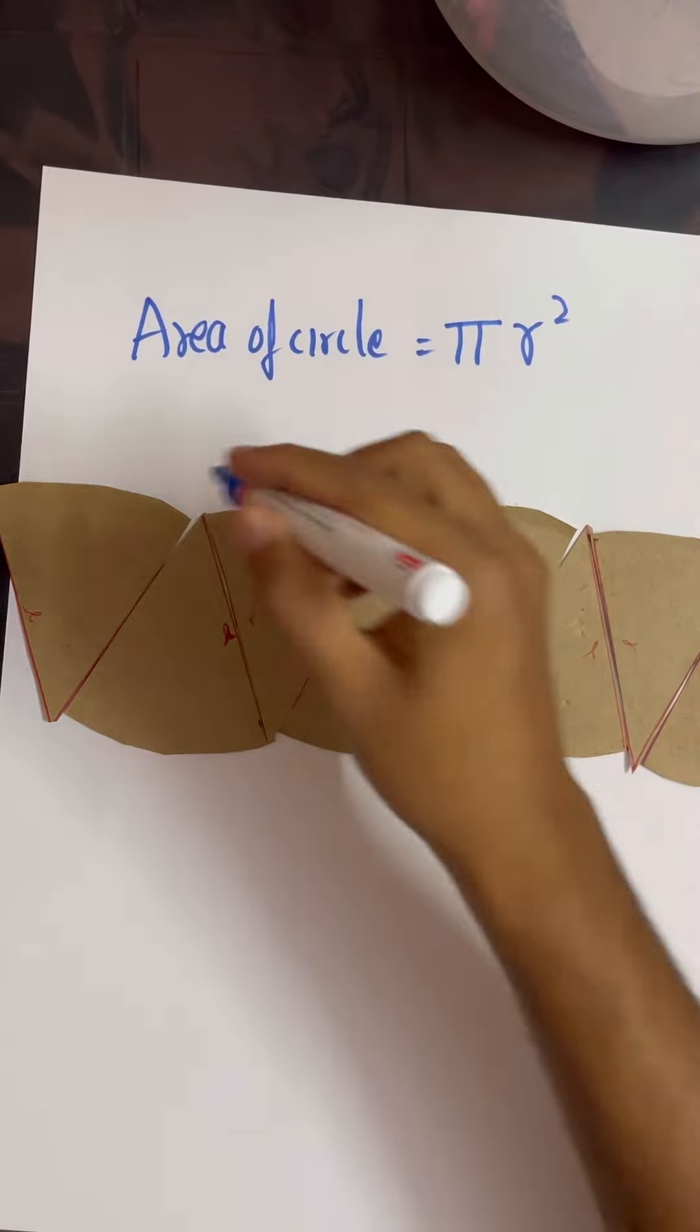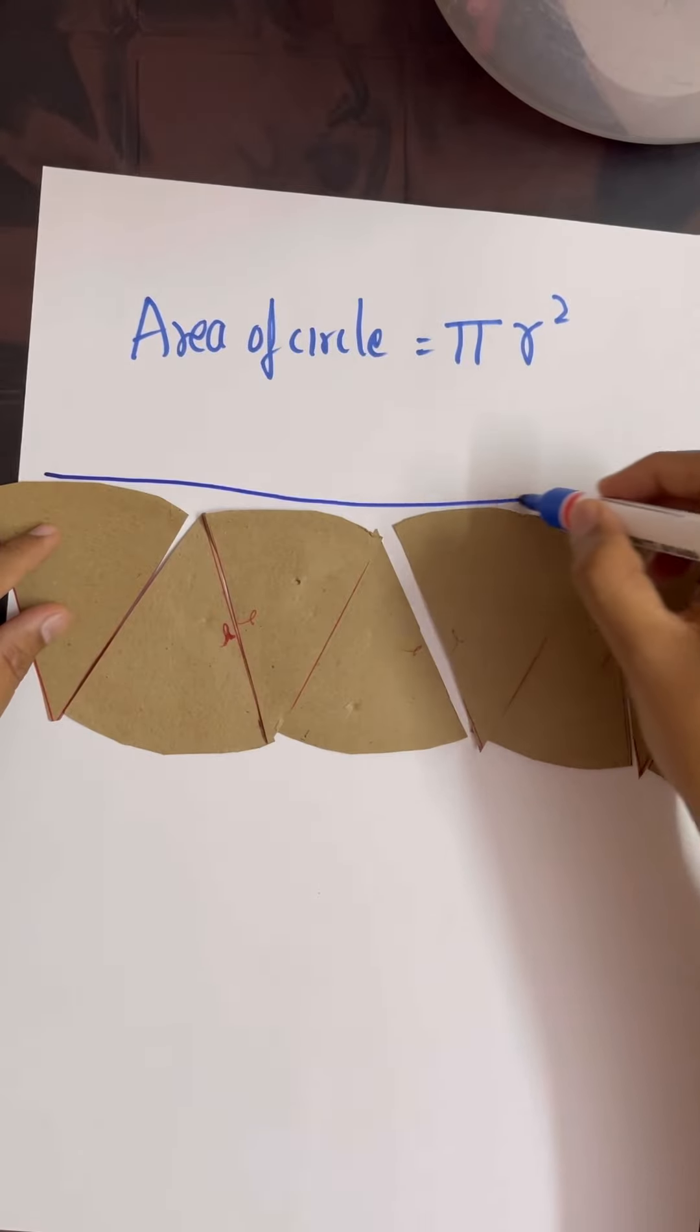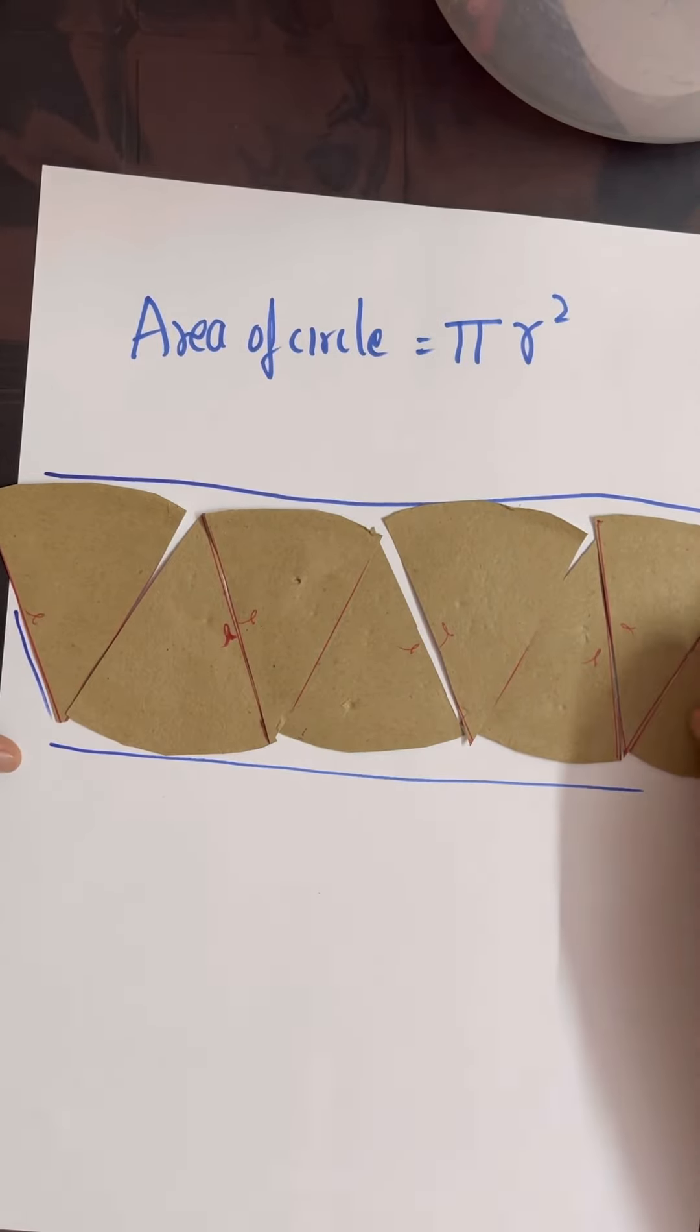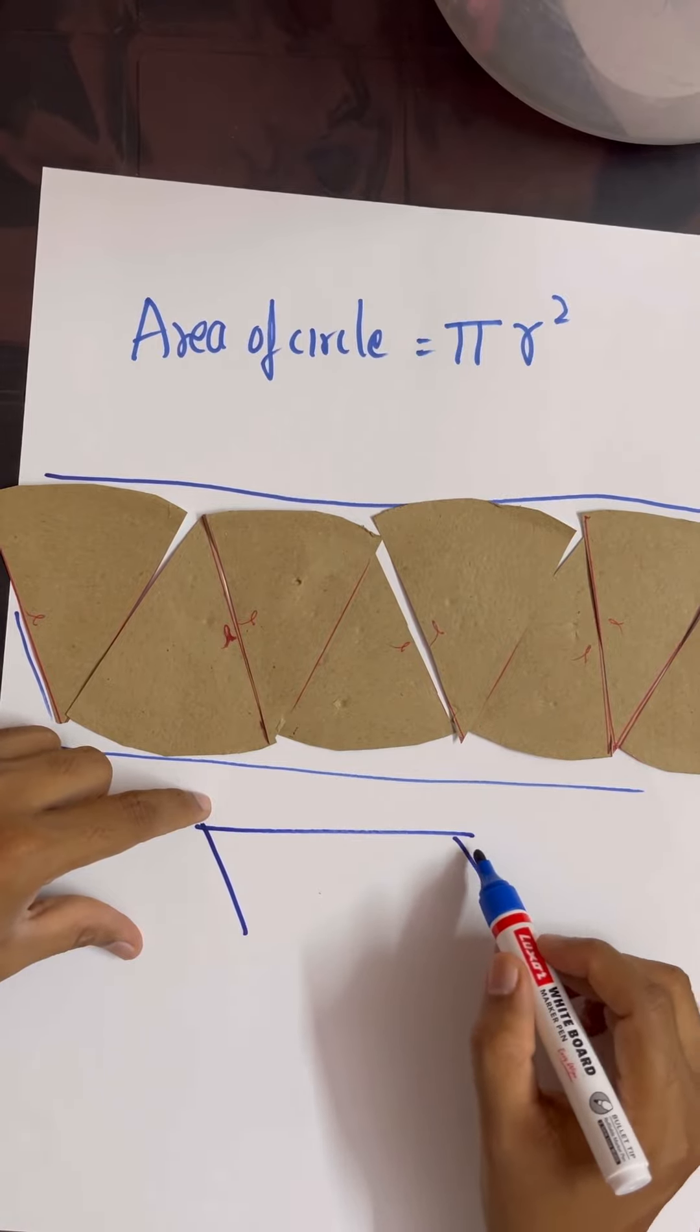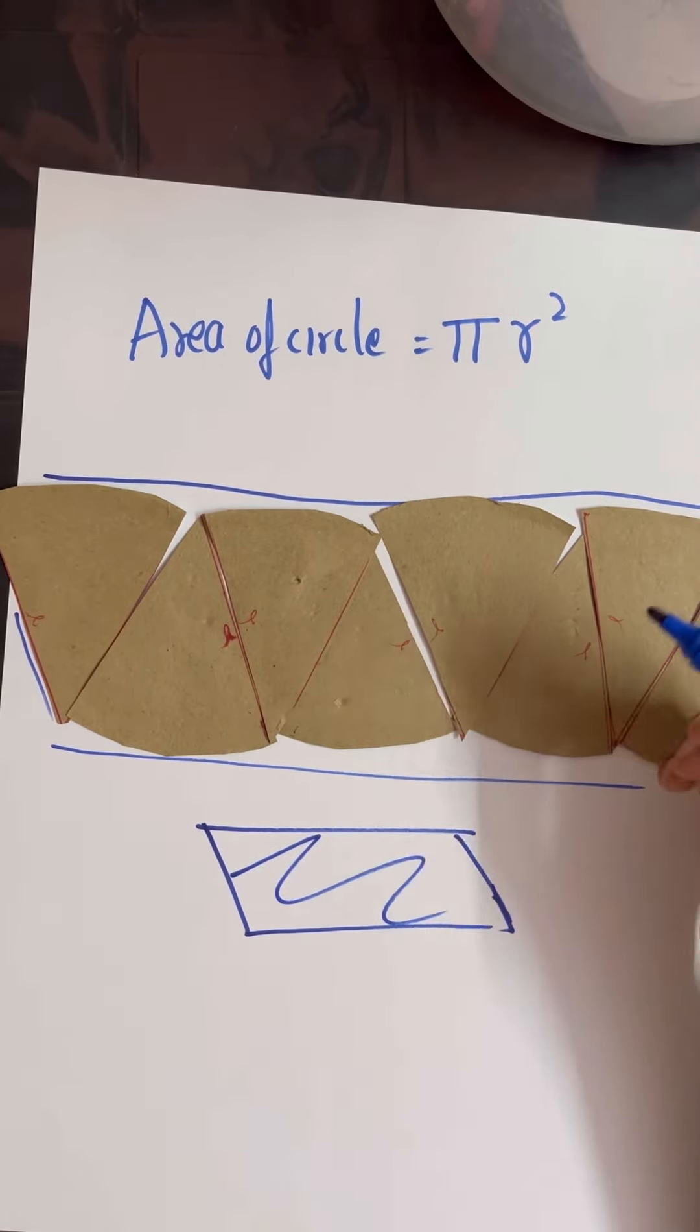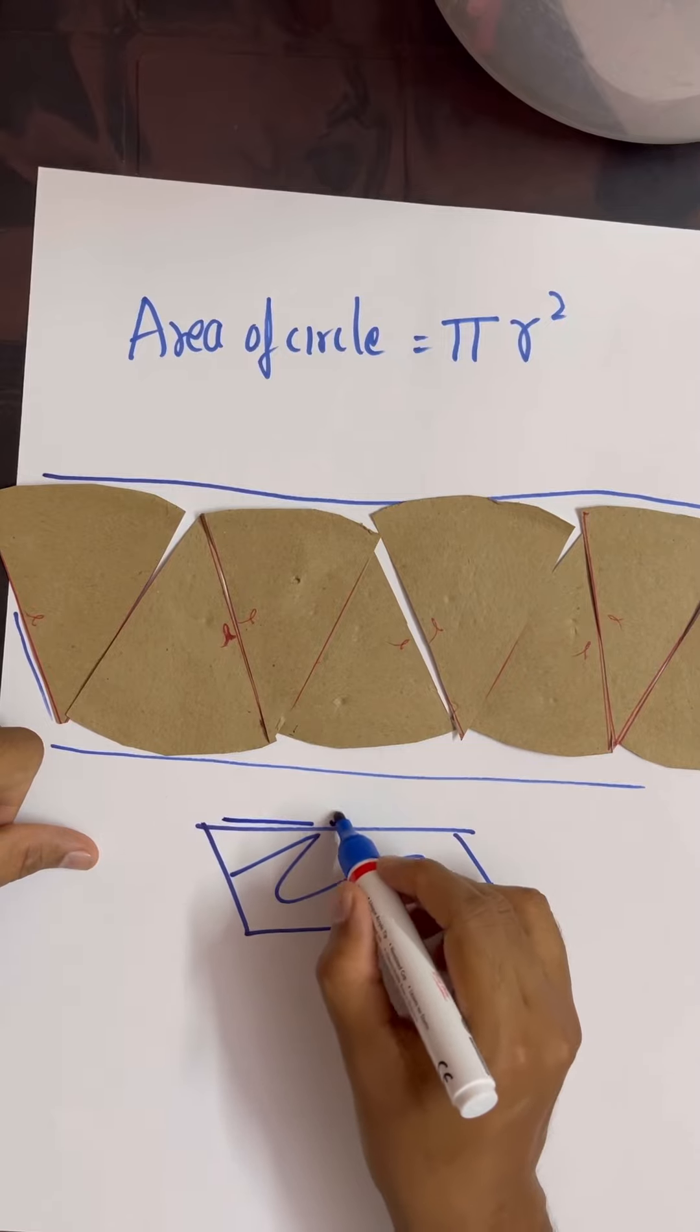arrange them. You can see it has formed a shape very close to a parallelogram. We've just transformed the circle into a parallelogram. The area of a parallelogram is length times height, or base times height.